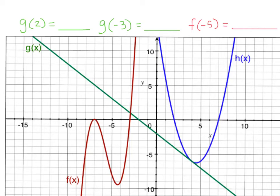What you've got is three different functions graphed on this coordinate plane. You've got g of x in green, f of x in red, and h of x in blue. What they want us to tell them is, using the graph, tell us g of 2, g of negative 3, and f of negative 5. We're going to do these first three.